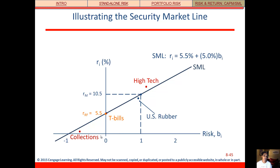Putting this together on the security market line: fairly valued stocks plot right on the line — the market and T-bills plot on it. HITECH plots above the line because it's undervalued. Collections and U.S. Rubber plot below the line because they're overvalued. Above the line means getting more return than risk warrants; below means getting less than you should.